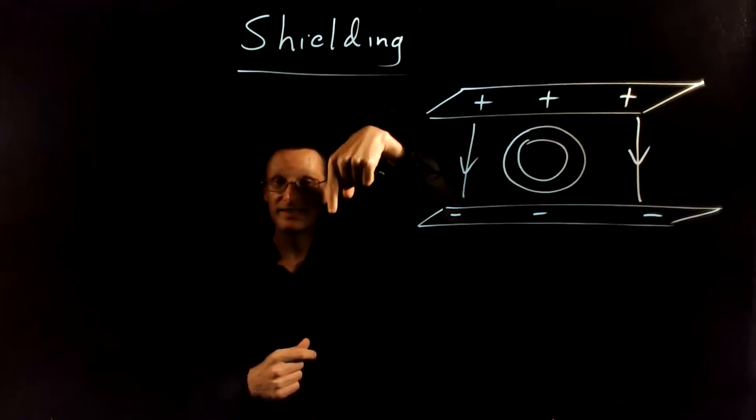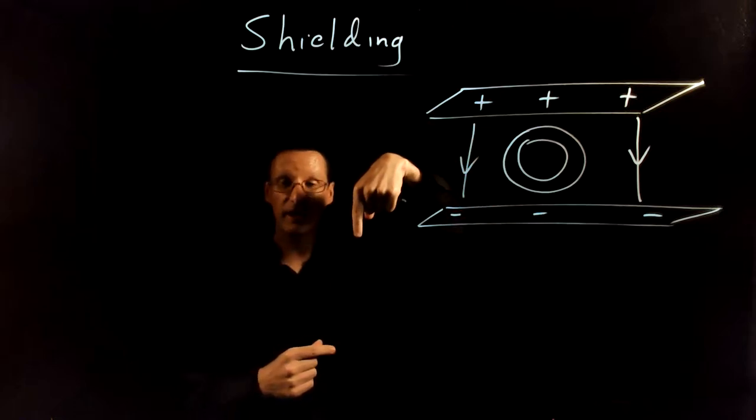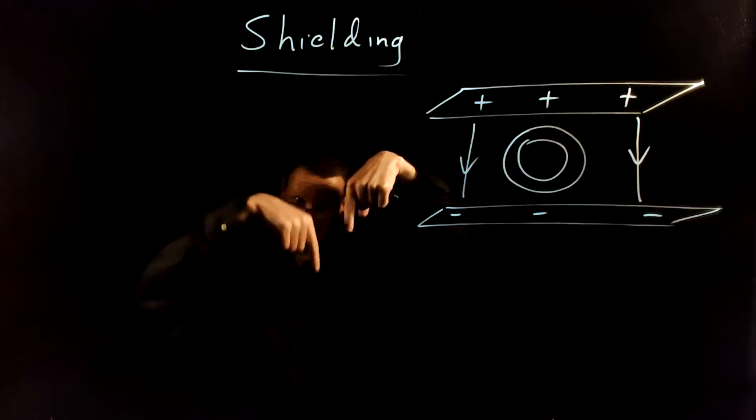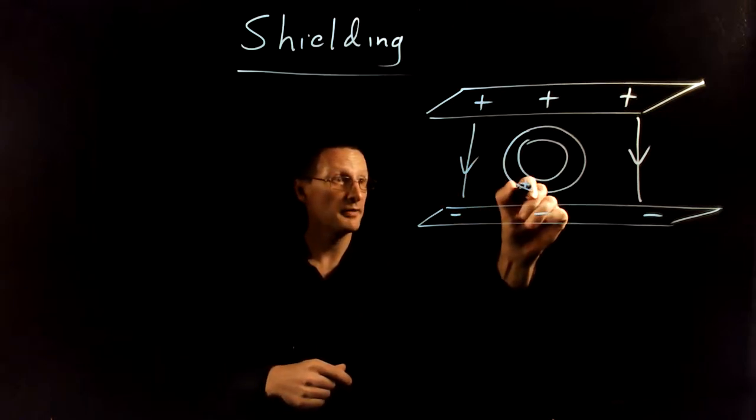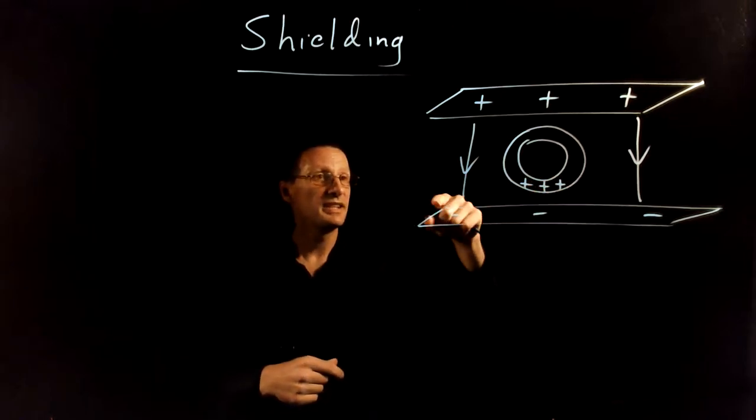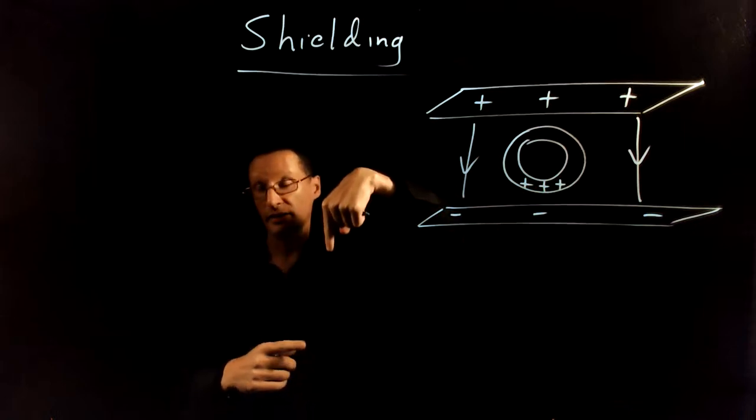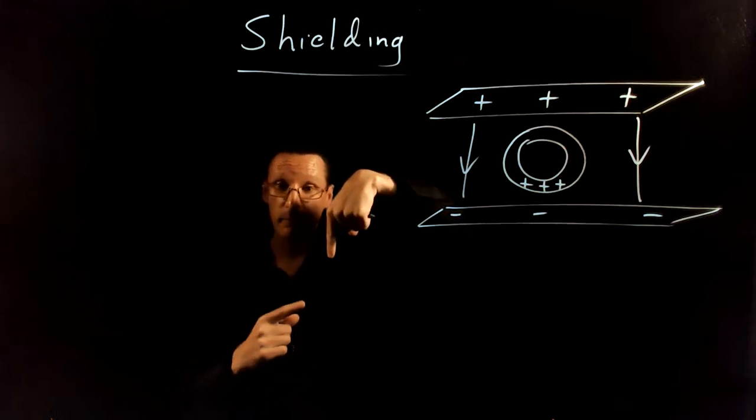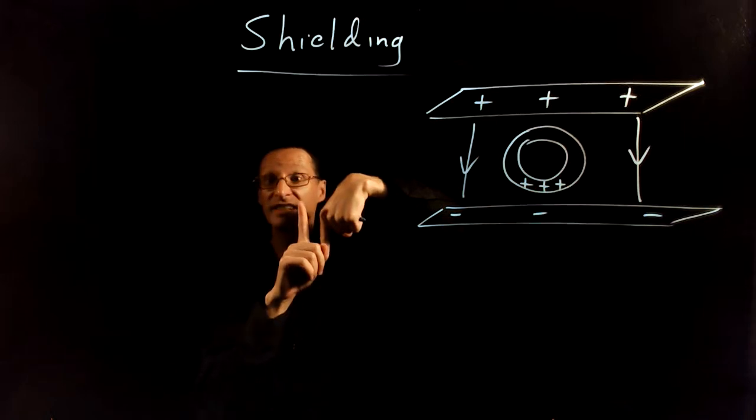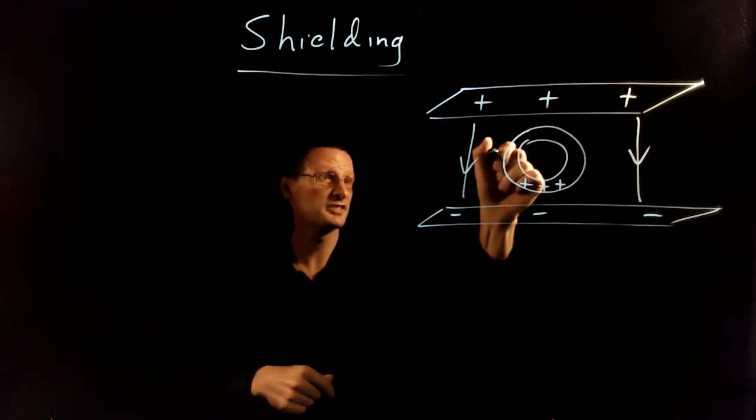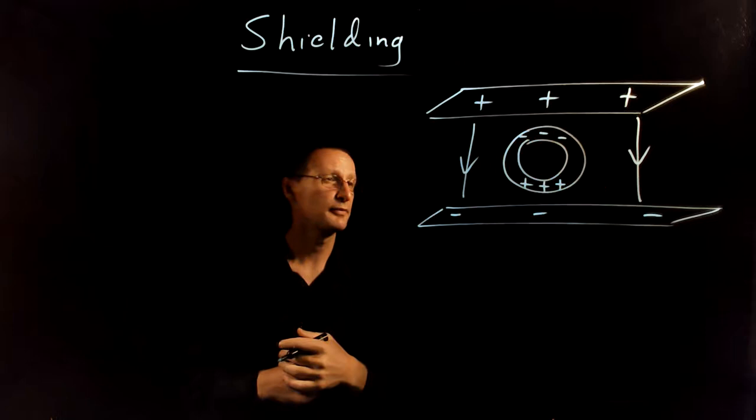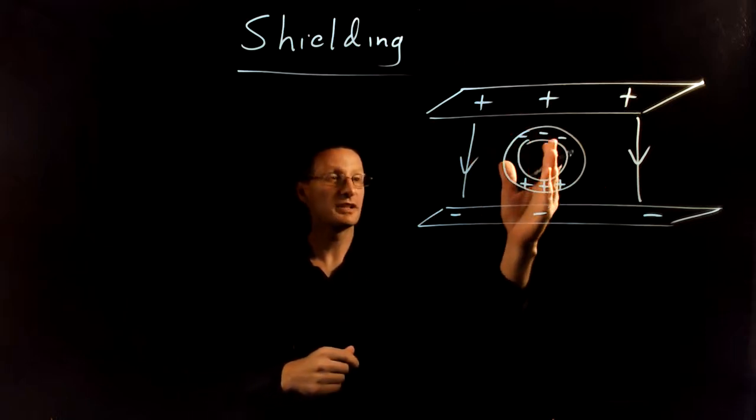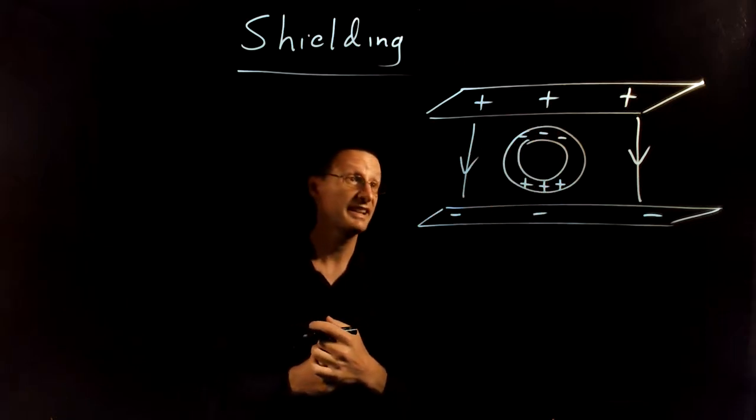Well, the electric field points down. The positive charges are going to feel a force down and so they're going to go to the bottom of the conductor. The electric field, the effect of the electric field pointing down on the negative charges, they'll feel a force in the opposite direction because they're negative charges. And so the charges are going to rearrange themselves to look like this.